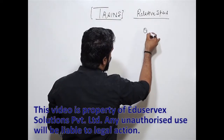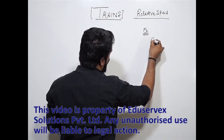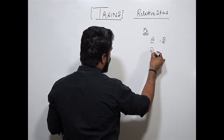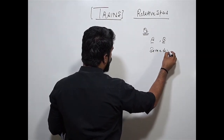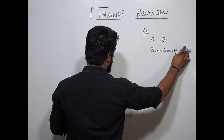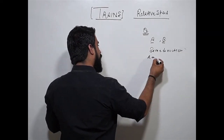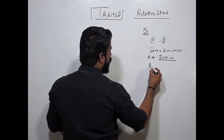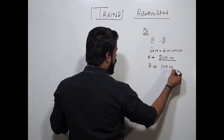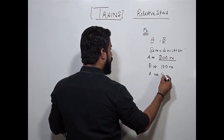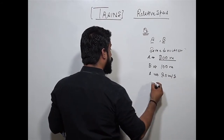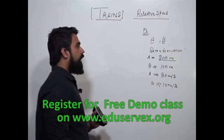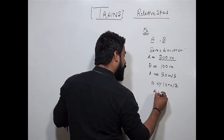We'll take a simple example. We have two trains, Train A and Train B. They are moving in the same direction. A is 200 meters in length, B is 100 meters in length. A's speed is 20 meters per second, B's speed is 10 meters per second. You have to find out in what time A will cross B.